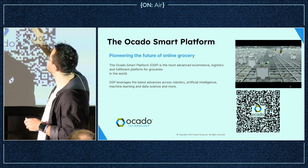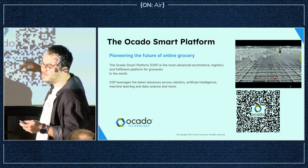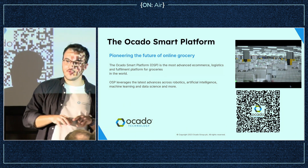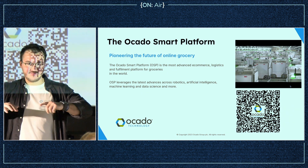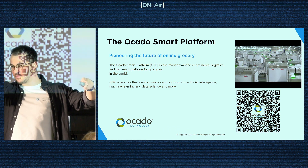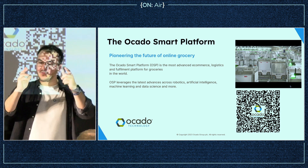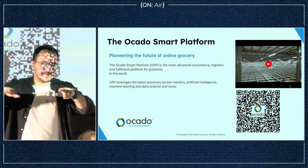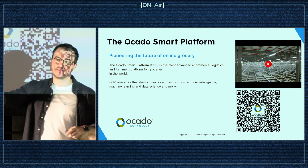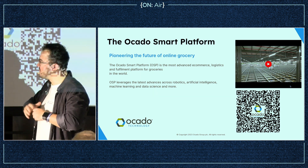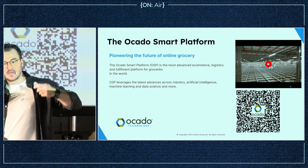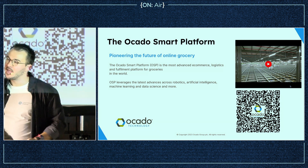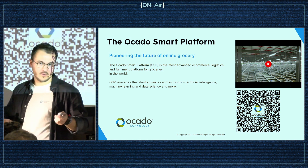I didn't know such a thing existed until I entered Ocado. These are very large grids with thousands of robots moving groceries around — a massive fleet coordinated by so-called control towers. You order your food from the e-commerce platform we provide, the order gets into the customer fulfillment centers, magic happens with robots picking the food, and eventually it's delivered to your home.